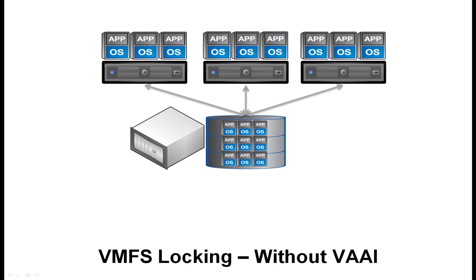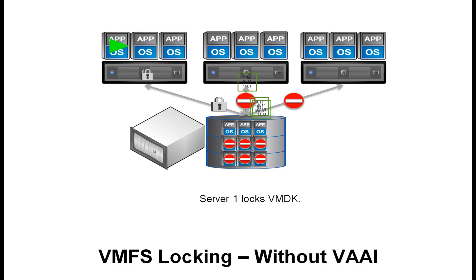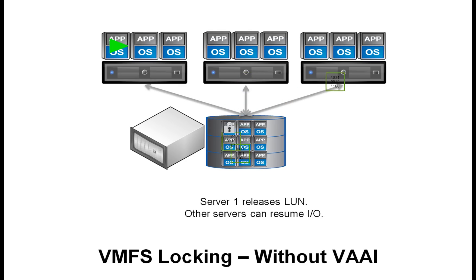Hardware-assisted locking enables more granular locking so that one ESX server does not need to lock all other servers out of a LUN during certain operations. Without VAAI, in order to safely update VMFS metadata or lock a virtual machine's disk, an ESX server has to lock the entire LUN. This briefly blocks all I/O from other servers using that LUN. The server locks the smaller object that it actually wanted and then releases the LUN lock, and other servers can resume their I/O.